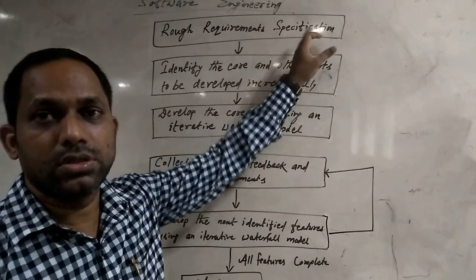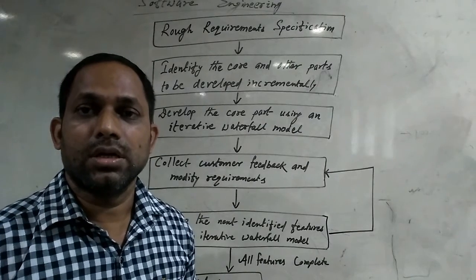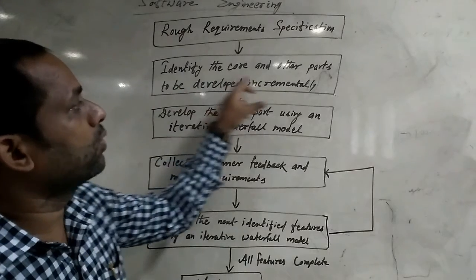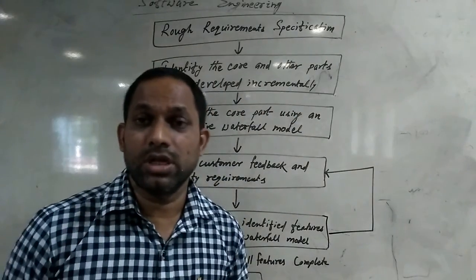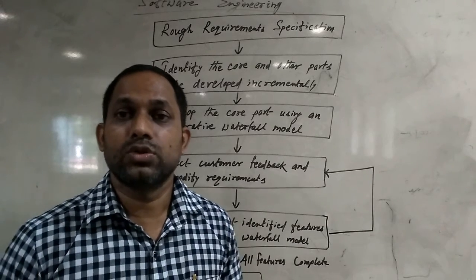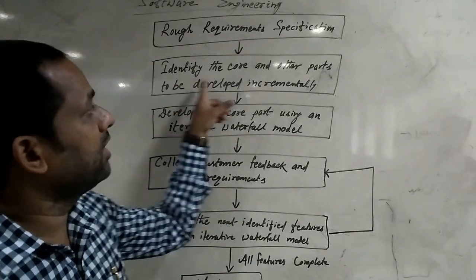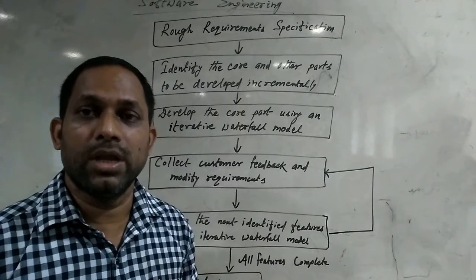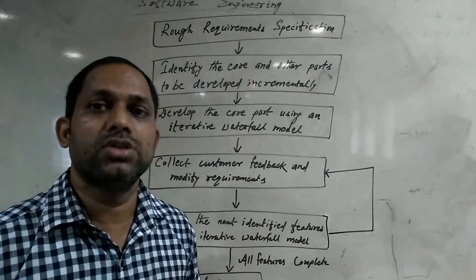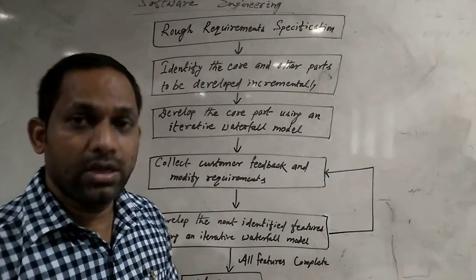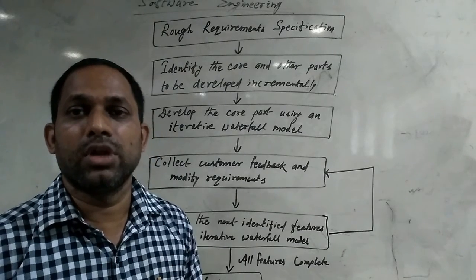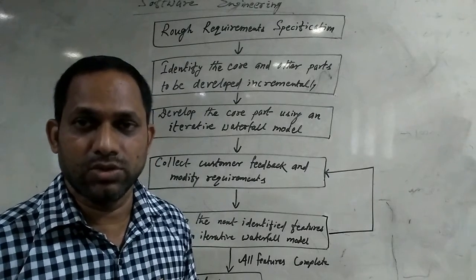Recording requirements and specifications is the first step. We record and maintain the requirements from the customer. We can identify the core module and other parts to be developed incrementally. The whole project is divided part by part. Then we identify which is the core module — the core module is identified first, because once the core module is developed, the rest of the modules can be developed.